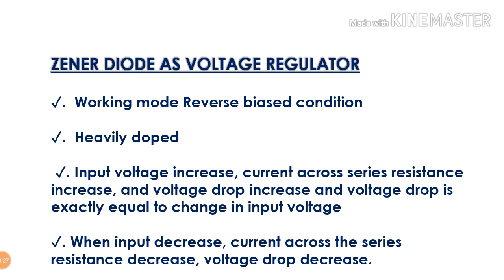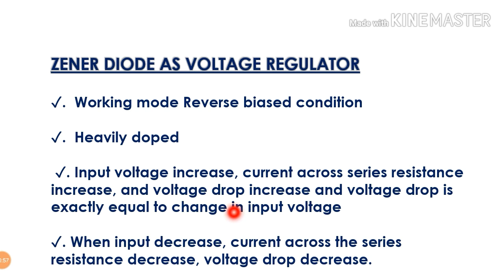If the input voltage is variable, we are pointing to the regular output. Circuit diagram explains it. Input voltage is variable, current is variable, voltage drop is variable. That means we can get exactly the constant output voltage. This voltage drop is equal to the change in the input side. The voltage drop is exactly equal to the change in input side, so the output remains constant.